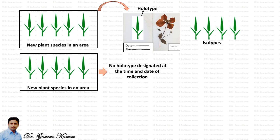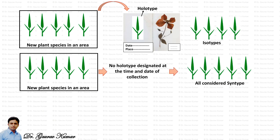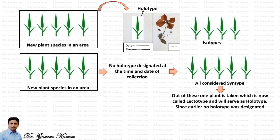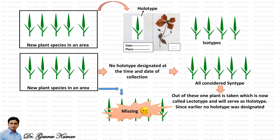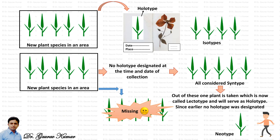In another case, you collected those five plants but forgot to designate a proper holotype at the time of collection, so all five plants are considered syntypes. From these syntypes, one plant is then selected and called the lectotype, which will serve as the holotype since none was designated earlier. If you later lose all five plants, you go back to the same area, collect a new plant, and use it as a holotype — this new plant is called the neotype.